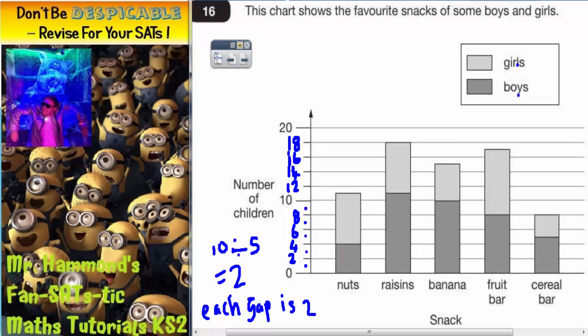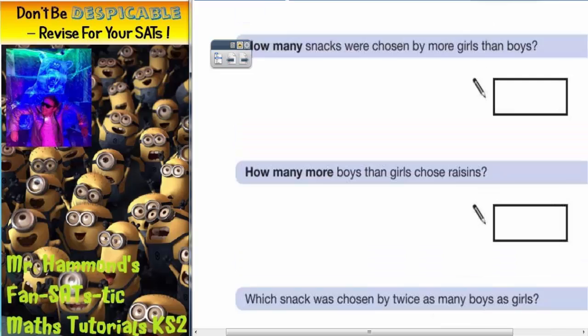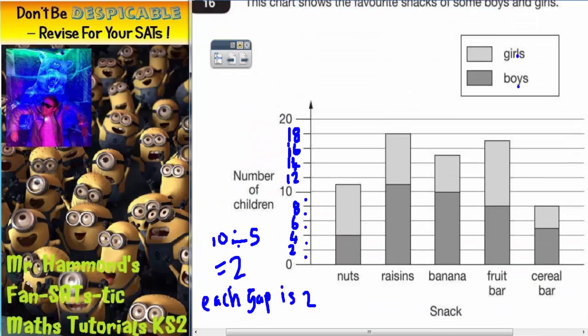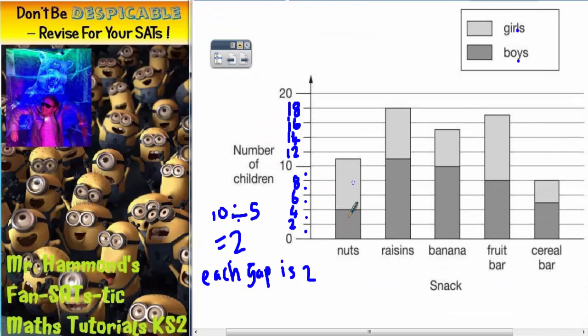Before we answer any of these questions, I'm actually going to work out what each bar is. I think that will make it easier. So let's do the boys first, the dark grey. Boys on the nuts is going from 0 to 4 so that's 4.